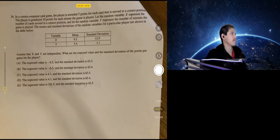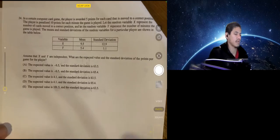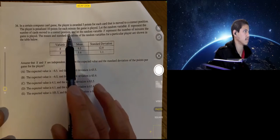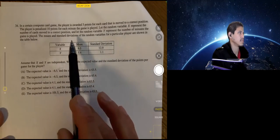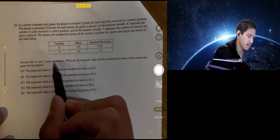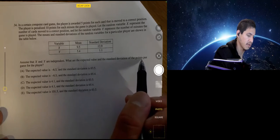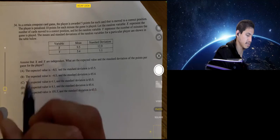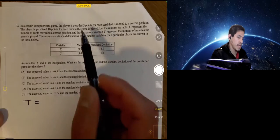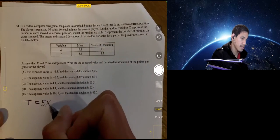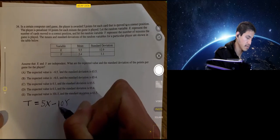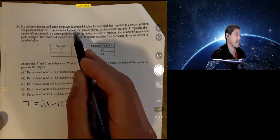All right. In a certain computer card game, the player is awarded five points for each card that is moved to the correct position. The player is penalized 10 points for each minute the game is played. Let the random variable X represent the number of cards moved to the correct position, and let the random variable Y represent the number of minutes that the game is played. The means and standard deviations of the random variables for a particular player are shown in the table below. Assuming that X and Y are independent, what is the expected value and the standard deviation of the points per game for the player? Okay. So let's make another variable. I like to use T that's going to represent the number of points you earn. So it would be five times X, because you get five points each time a card moves to the correct position, minus 10Y, because you lose 10 points each time a minute passes, and that's represented by Y.